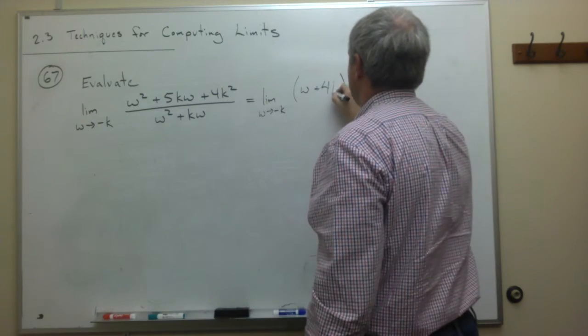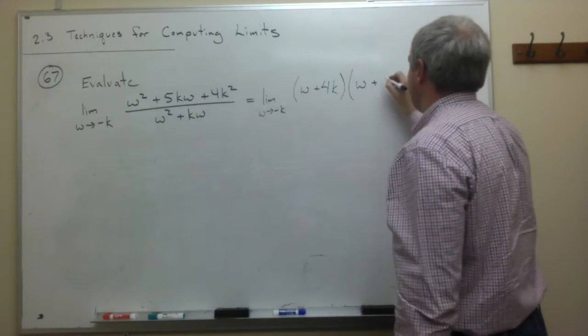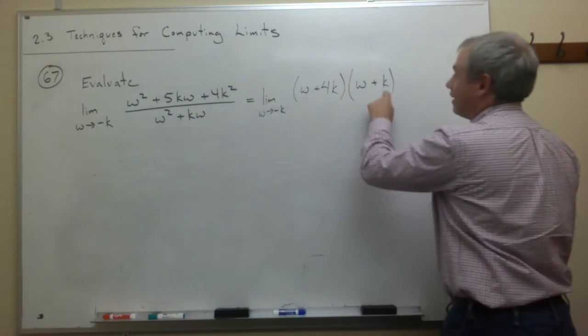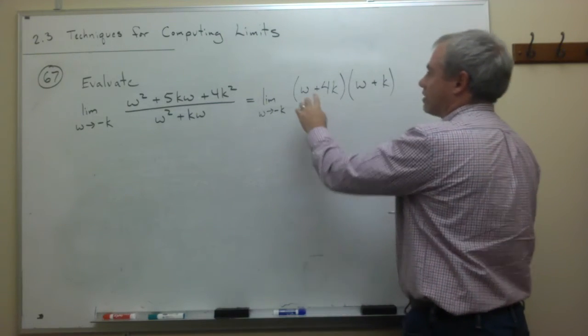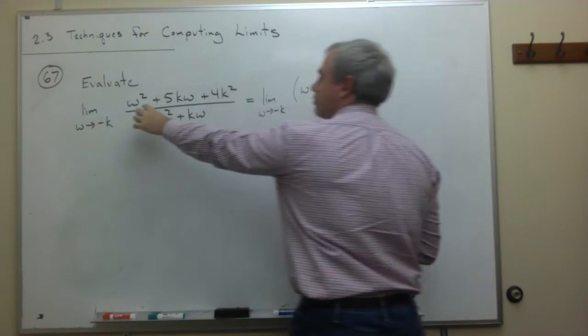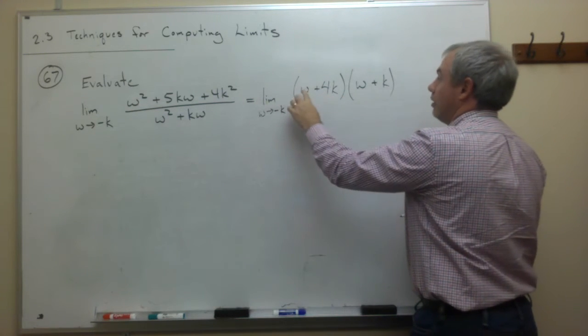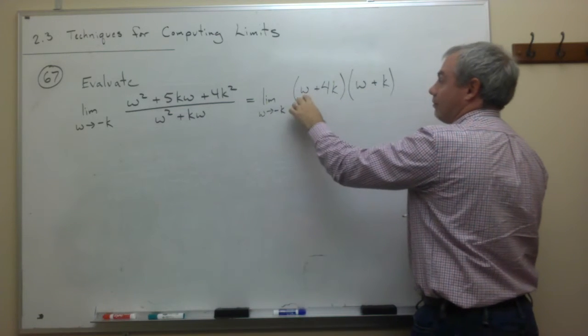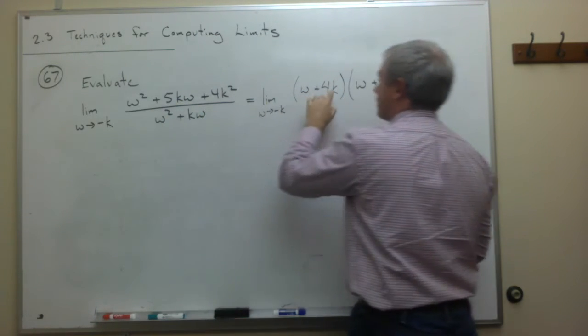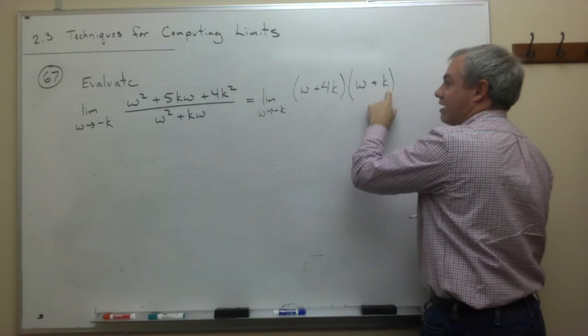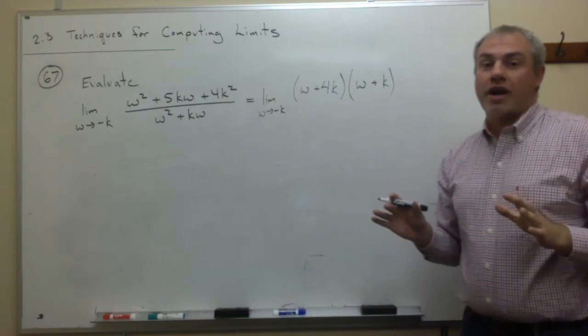So we'd have a 4, but we need to add this k in, and we'd have a k or a 1k. So let's look at this for a second. W times w is w squared. 4k times w is 4kw, plus a kw is 5kw, and 4k times k is 4k squared. So everything's great.